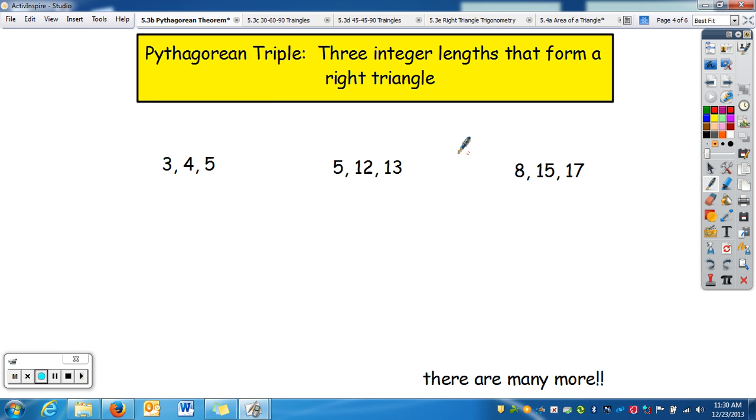Alright, so then we have something called a Pythagorean triple. These are three integer lengths that form a right triangle. There are three famous Pythagorean triples, 3, 4, and 5. If you go 3 squared plus 4 squared, it does equal 5 squared. That's 9 plus 16, which is 25, and 5 squared is 25.